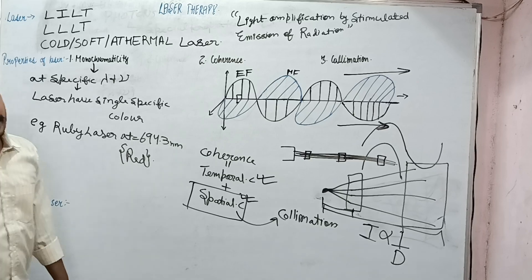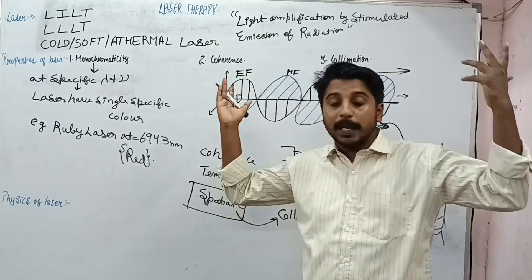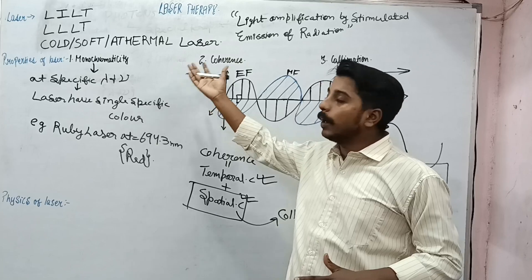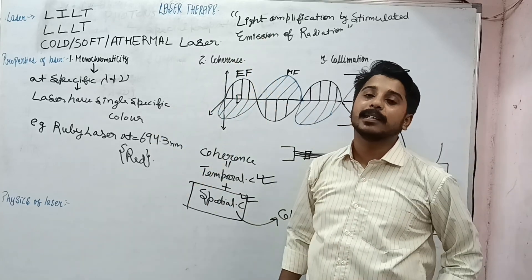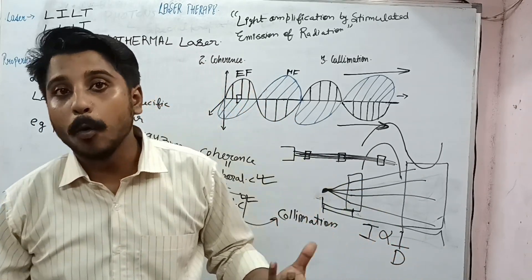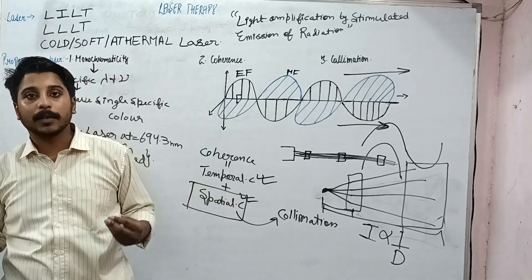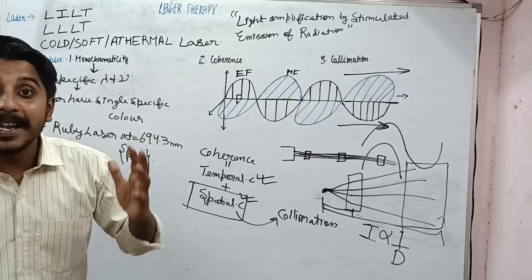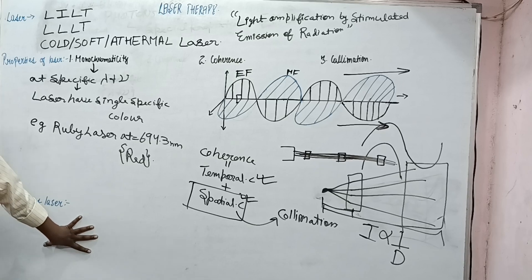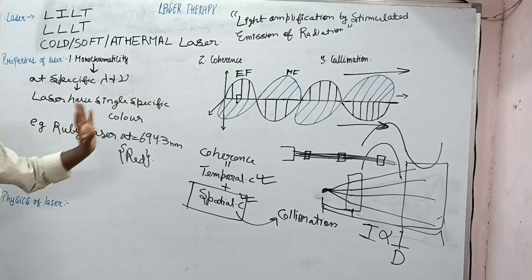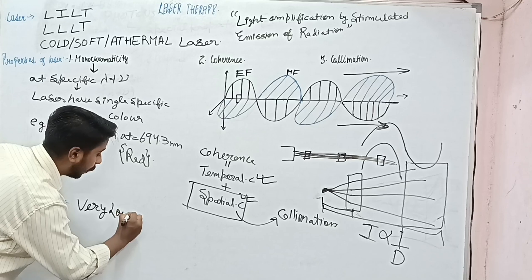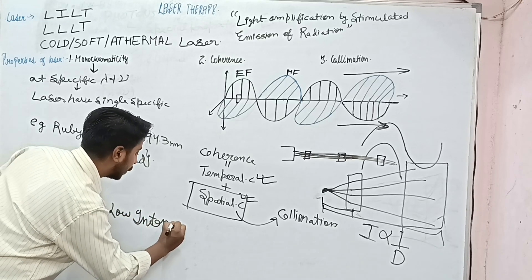Now regarding the physics of laser — one may think that laser must be of very high intensity. But in low level laser therapy as used in physiotherapy, the intensity is very low — even less than the 60-watt bulb we use at home. So do not think this laser has very high intensity; here we use very low intensity of laser.